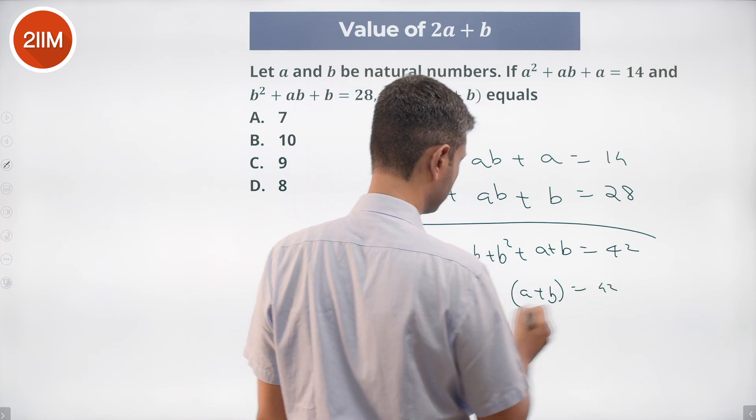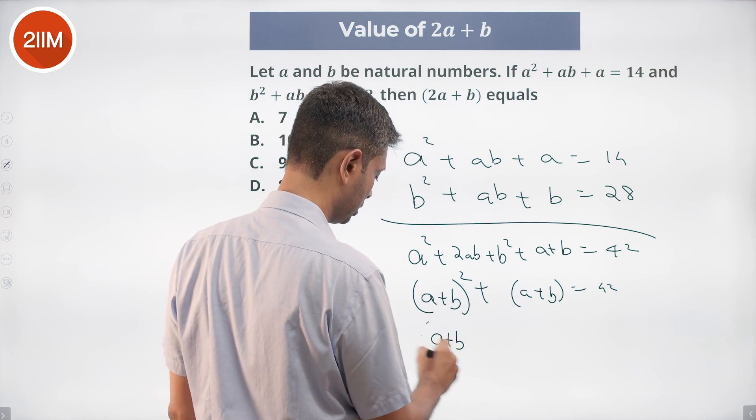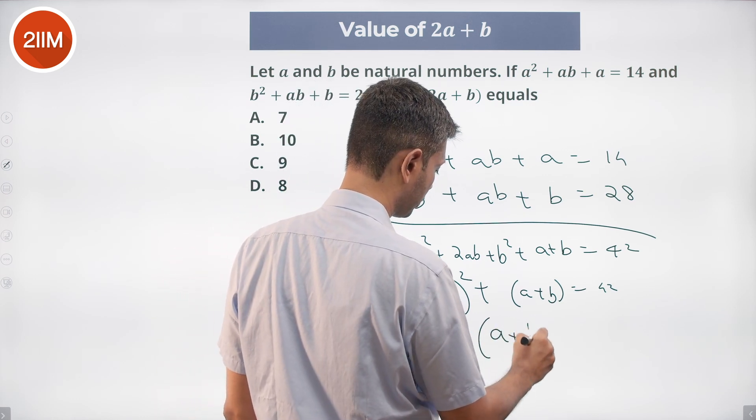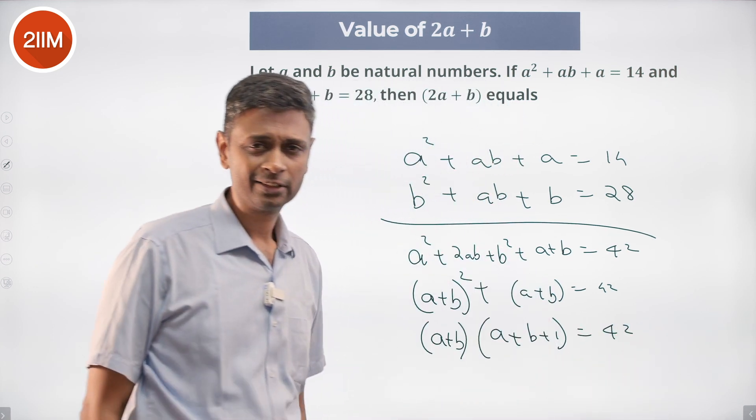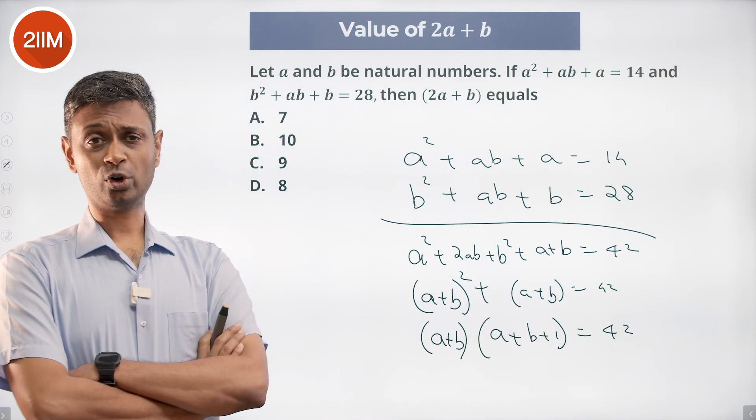a plus b into a plus b plus 1 is 42. Put a plus b as x. x into x plus 1 is 42.